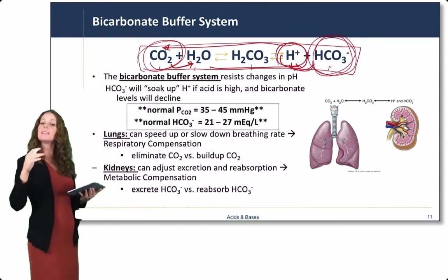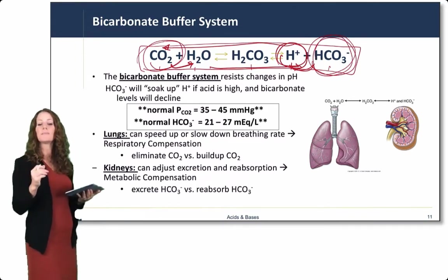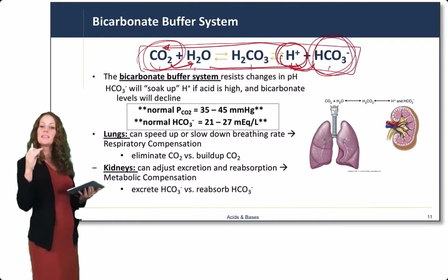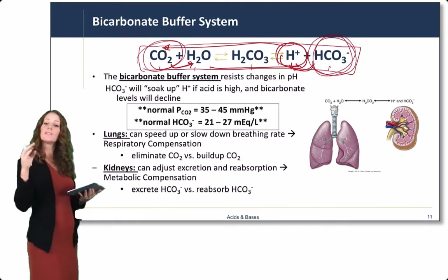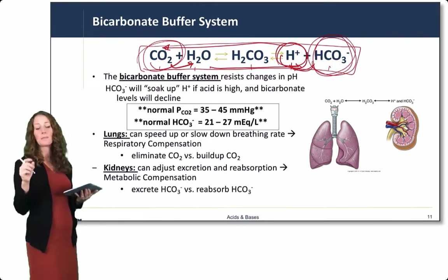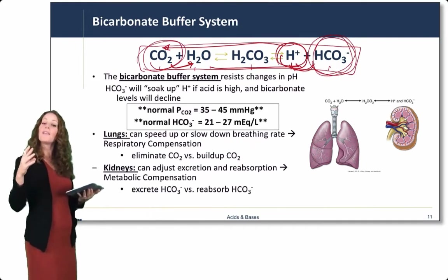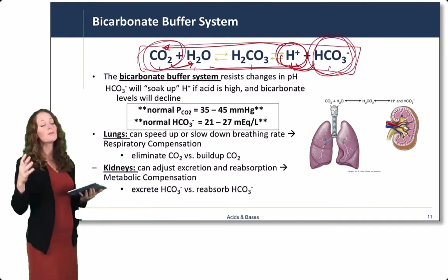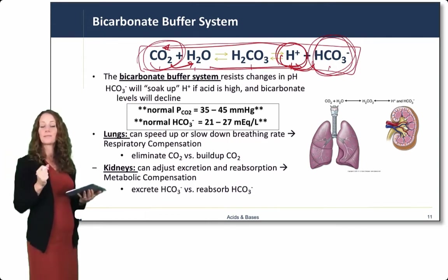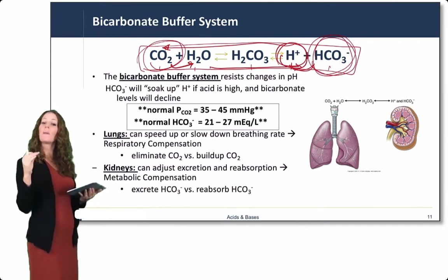The kidneys can also adjust excretion and reabsorption. This we would call metabolic compensation. The kidneys can excrete more bicarbonate versus reabsorbing more bicarbonate. We'll talk about this more when we get to the renal system and I'll show you those pathways. But for now, think about bicarbonate and CO2 as ways in which the body can compensate for acid and base disorders. A respiratory compensation is a change in breathing rate. A metabolic compensation is a change in the excretion or reabsorption of bicarbonate.